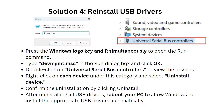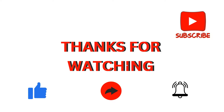Right-click on each device under this category and select Uninstall Device. Confirm the uninstallation by clicking Uninstall. After uninstalling all USB drivers, reboot your PC to allow Windows to automatically reinstall the USB drivers. These are the simple solutions to tackle the problem of your docking station USB port not working.